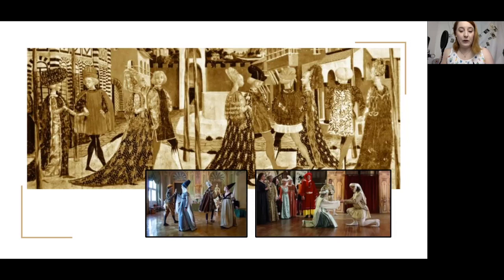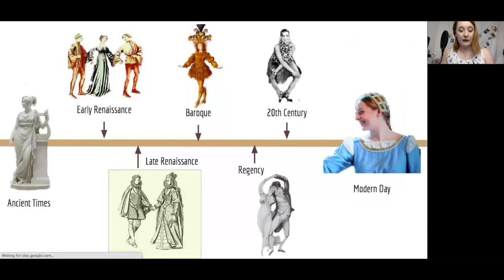Unusually for this period we have a number of sources which describe the step vocabulary. We know that 'continenzi' were small steps to change weight, while a 'movimenti' was a quick movement of the body for punctuation — a little bit like a body wiggle. As we move into the late Renaissance, the Ballo began to adapt into new forms of dance, the most notable descendant of which is the Pavan.